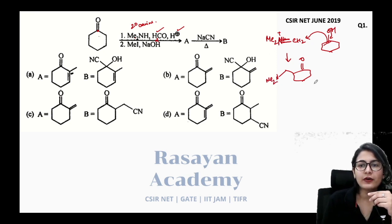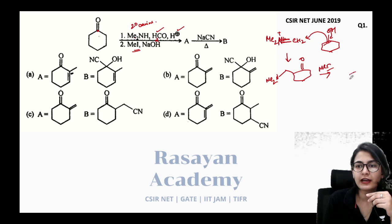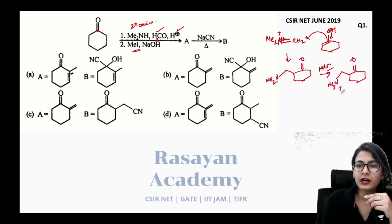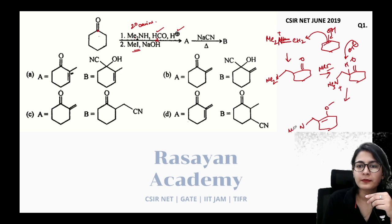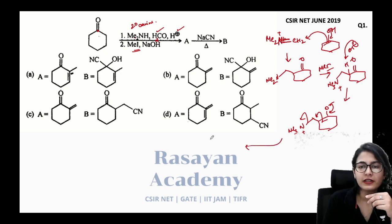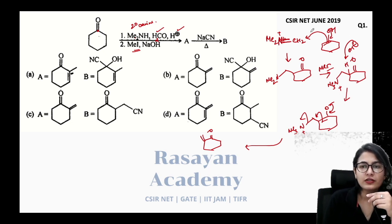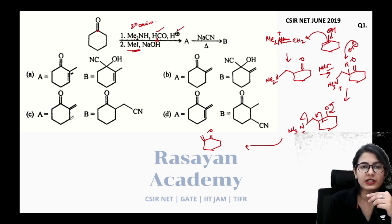This is the Mannich base you get in the first step. In the second step, methyl iodide is present along with a base. The methyl iodide converts the amine into a quaternary ammonium ion. Then OH⁻ through E1CB mechanism causes elimination — NMe₃⁺ is a good leaving group and leaves. You get an alpha-beta unsaturated ketone. This is the Mannich reaction followed by exhaustive methylation and elimination.